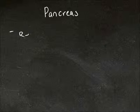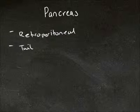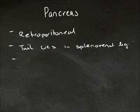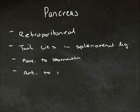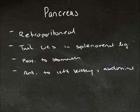The pancreas is retroperitoneal, and its tail lies in the splenorenal ligament. It lies posterior to the stomach and is anterior to the left kidney, the abdominal aorta, and inferior vena cava.